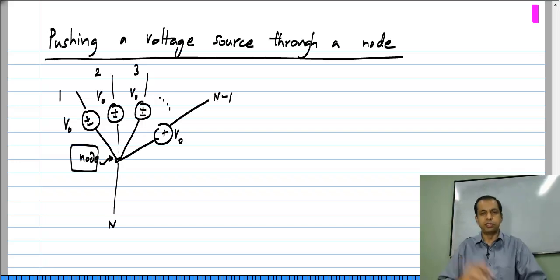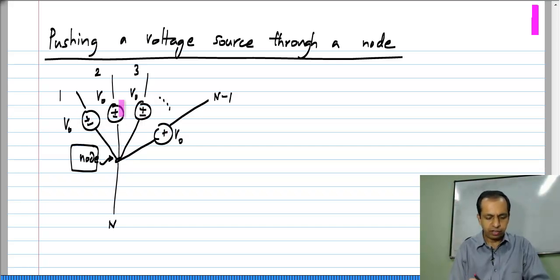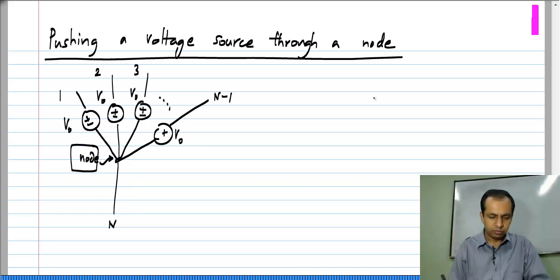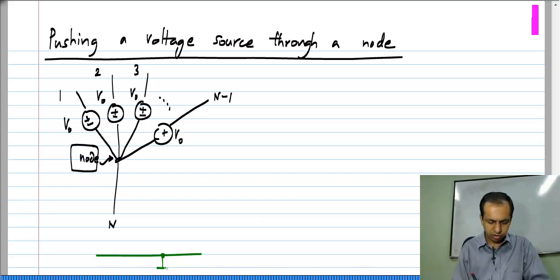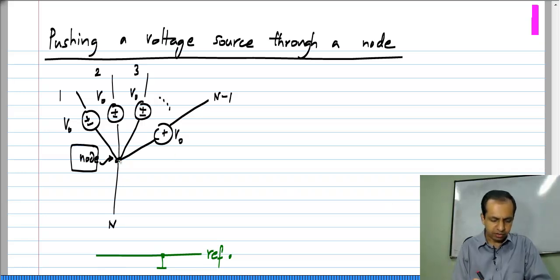This is a contrived situation which I am using to illustrate the point. We have a node, n branches connected to it, and in n minus one of them we have identical voltage sources in the same direction; the nth branch can be arbitrary. Now, let us say we have some reference node with respect to which we measure all the voltages — all the node voltages — and let us say the voltage at this node is some V n.